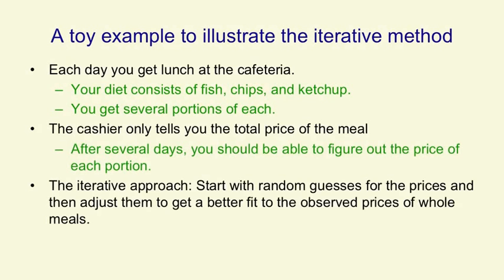In the iterative approach, you start with random guesses for the prices of portions, and then you adjust these guesses so that you get a better fit to the prices that the cashier tells you. Those are the observed prices of whole meals.